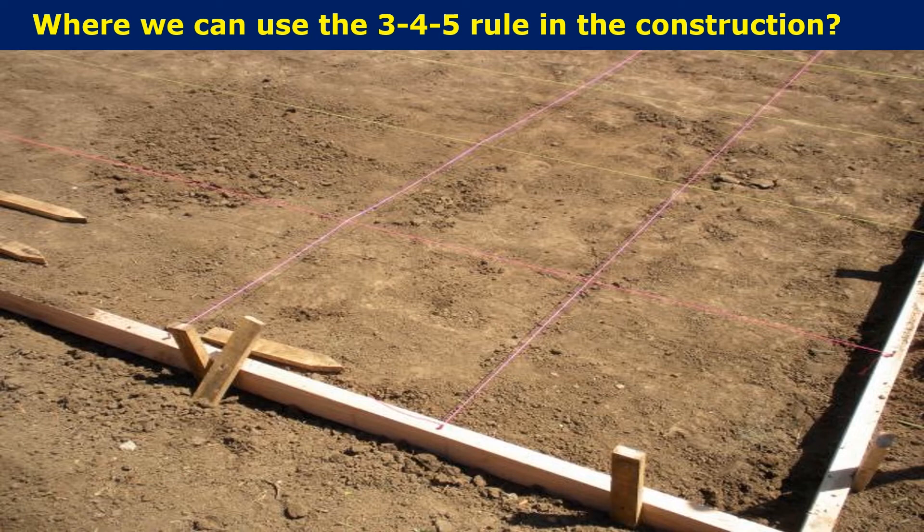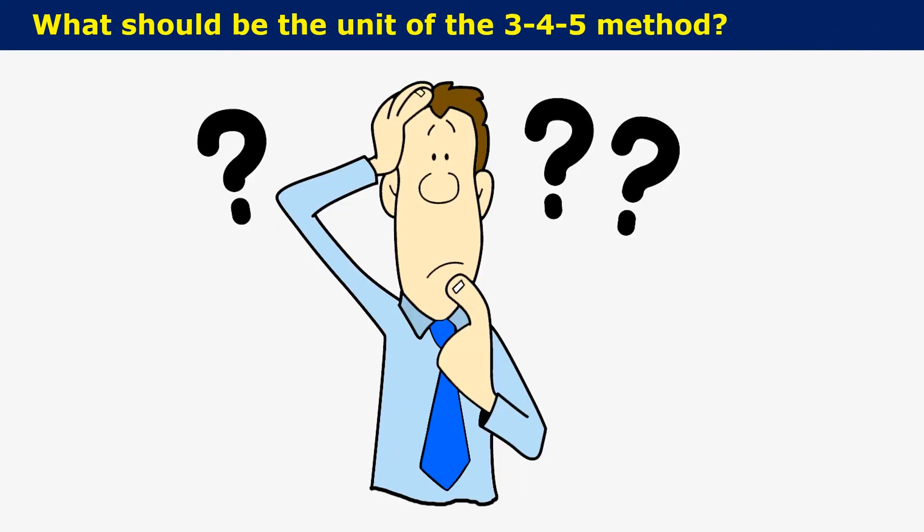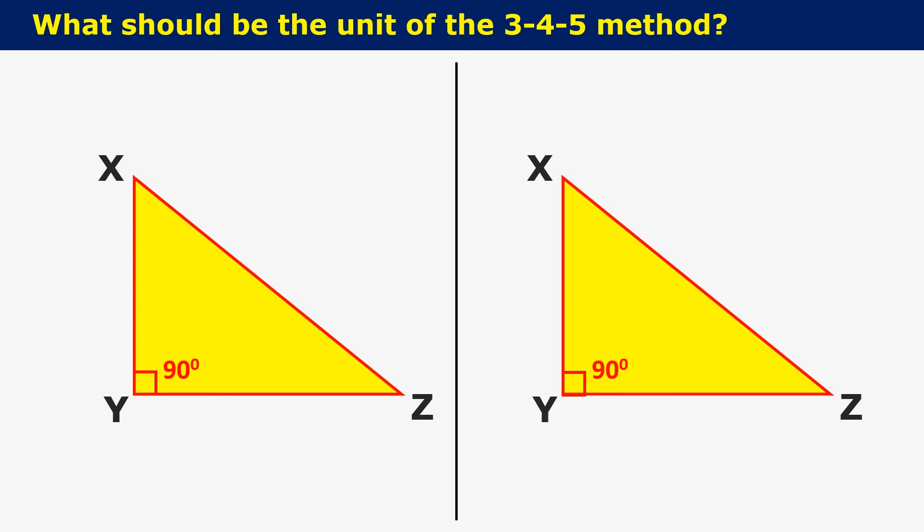Now another question can arise in the mind. What should be the unit of 3-4-5 method? You can use any unit of measurement in this 3-4-5 rule. Suppose if you measure the sides in meter, like 3 meters and 4 meter length, the hypotenuse should be measured for 5 meters length. Similarly, for 3 feet and 4 feet measurement, the hypotenuse becomes 5 feet.